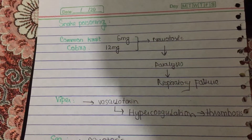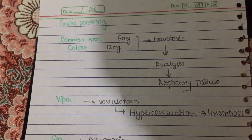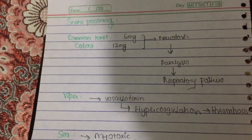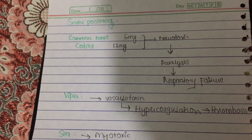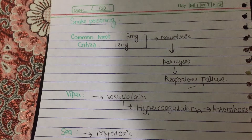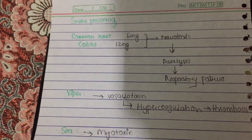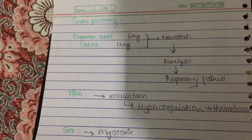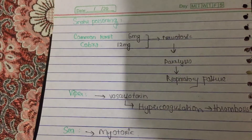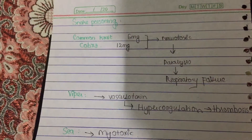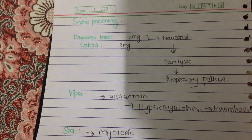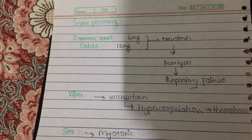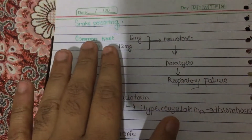Today we're going to discuss snake poisoning. We have different types of snakes in the world, but in our region like India and Pakistan, we have some common snakes. First of all, we have the common krait and the cobra — both of them are neurotoxic.